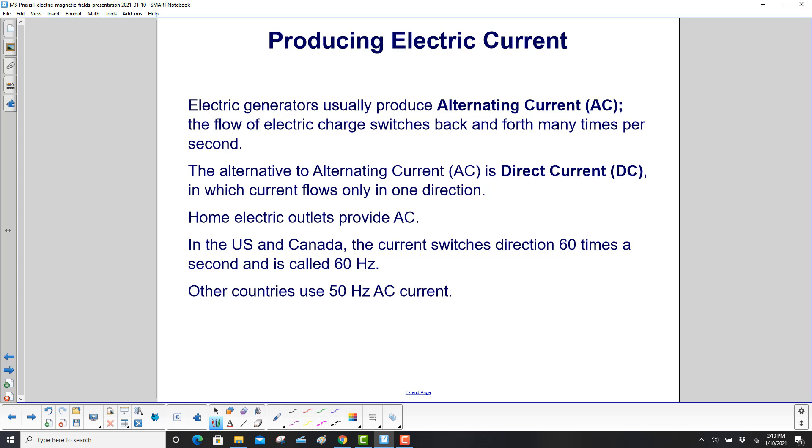Home electric outlets provide AC. In the US and Canada, the current switches directions 60 times a second and is called 60 Hz. Other countries use 50 Hz AC current.